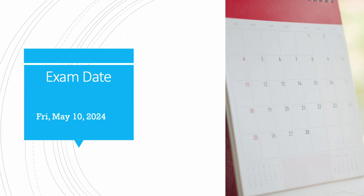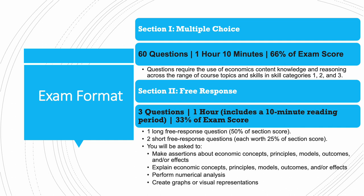The exam date for the AP Macroeconomics exam is Friday, May 10, 2024. The exam format is composed of two sections. First, the multiple choice section with 60 questions, 1 hour and 10 minutes (70 minutes) to answer them, comprising 66% of your exam score. The questions require you to use economics content knowledge and reasoning across course topics and skills in skill categories 1, 2, and 3.